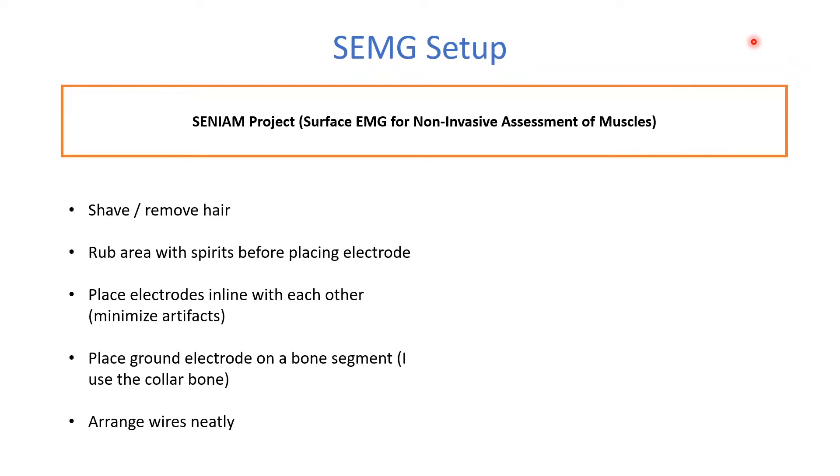The effectiveness of SEMG greatly depends on how well you place the electrodes and set the system up. Now, if you want the exact details of what procedures to follow and at what locations the electrodes should be placed for each muscle, you should check the Seniam project, its website online which is more or less the standardization body for SEMG. Apart from this, a few points to follow would be to shave or remove hair in the area where the electrode will be placed, clean it with spirits and keep the electrodes in line with each other and make sure the wires are arranged neatly to avoid people tripping or tearing the wire. Care should also be given when placing the ground or the reference electrode. You should place it on a bone segment. I typically use the collar bone for this purpose.